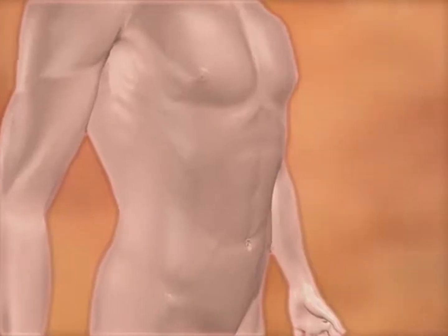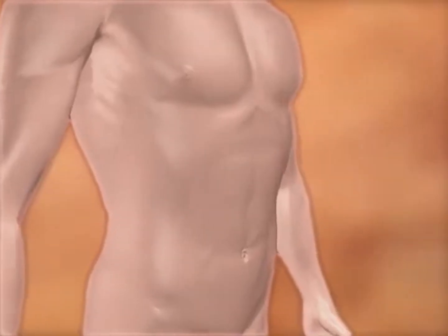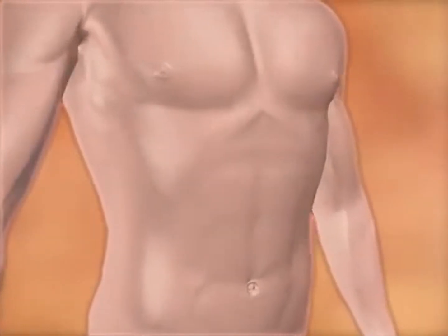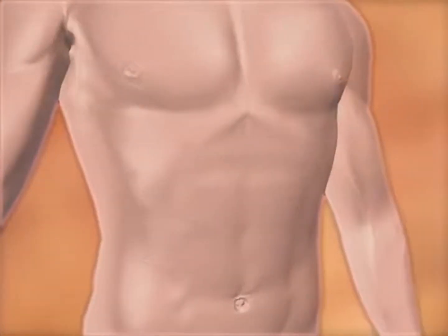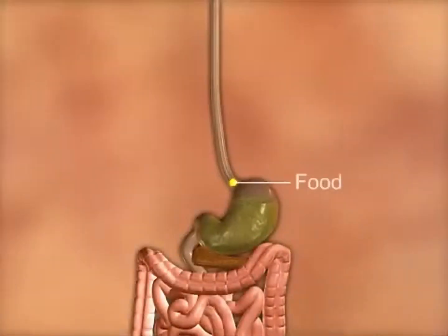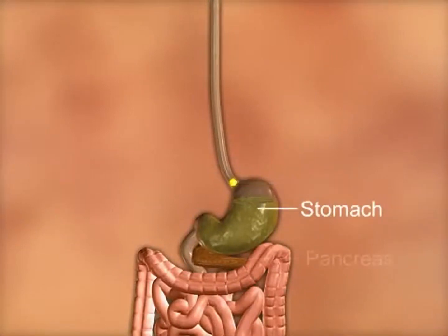Diabetes type 2 is the most common form of diabetes. Although it can occur at any age, it is more common in people who are overweight, sedentary, and over middle age.